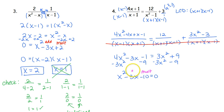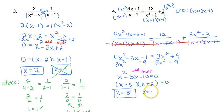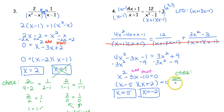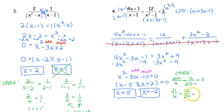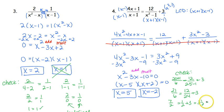We factor by finding two numbers that multiply to the outside and add to the middle: negative 5 and positive 2. That gives two possible solutions: x equals 5 and x equals negative 2. Checking x equals 5: we get 4 times 5 is 20 plus 1 over 5 plus 1, which is 21 over 6. On the right, 12 over 25 minus 1 plus 3 gives 12 over 24 plus 3, which is one-half plus 3, equaling 3 and a half. 21 over 6 reduces by a factor of 3 to 7 halves, which equals 3 and a half — so x equals 5 works.